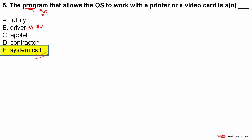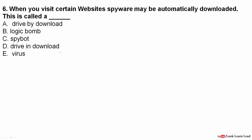The system call is the answer for that question. Next question: when you visit certain websites, spyware may be automatically downloaded — this is called what? Whenever you download something and along with it another file gets downloaded automatically, this is known as drive-by download. A logic bomb was explained earlier.